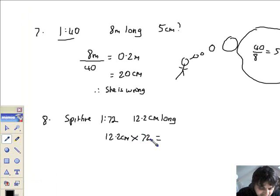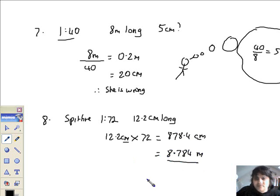12.2 times 72 gives us 878.4 and the answer is going to be in centimetres. I've not changed anything yet. Well, if we divide by 100, we're going to get 8.784 metres and that's good enough. It's more sensible, isn't it? So, that's Paul's Spitfire.